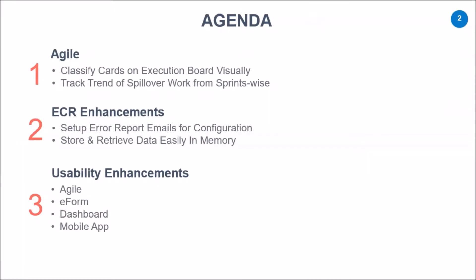The agenda for today's session: first we'll look at some new capabilities for our agile module, wherein it is now going to be easier to classify cards on the execution board, as well as a new widget that is going to help you keep track of work that is getting spilled over on a sprint-on-sprint basis. After that we'll go over enhancements in our ECR framework — emails sent every time there is an error in configuration — as well as how you can now store and retrieve data easily without a lot of configuration. Apart from these, we have done a whole lot of usability enhancements across the application.